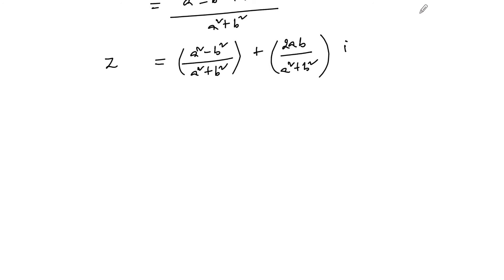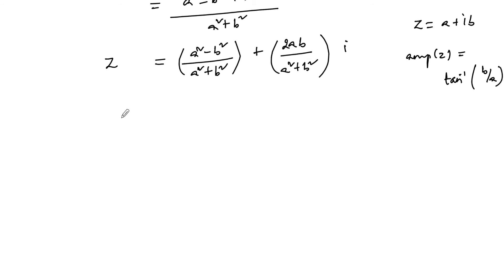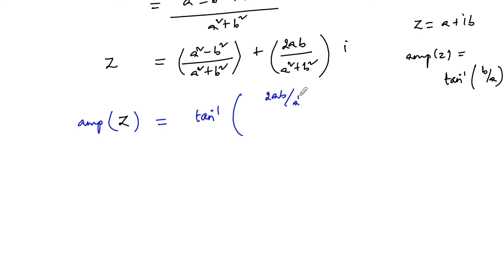We know that for a complex number z = a+ib, the amplitude or argument of z can be taken as tan inverse of b upon a. So the amplitude of z is equal to tan inverse of [2ab/(a squared plus b squared)] divided by [(a squared minus b squared)/(a squared plus b squared)].